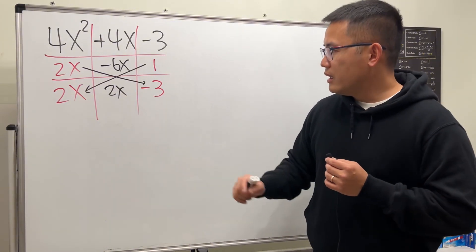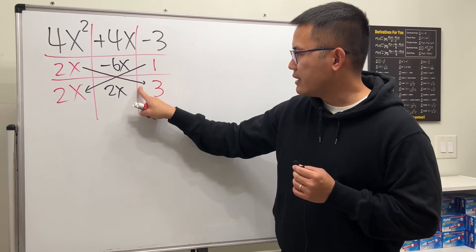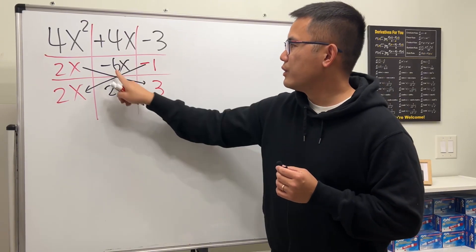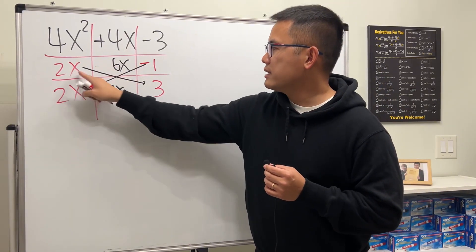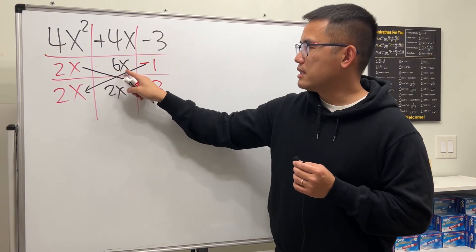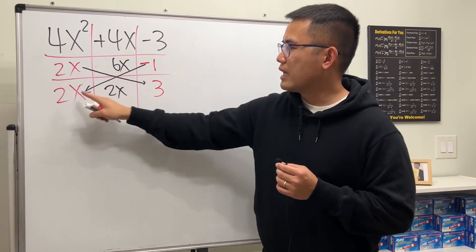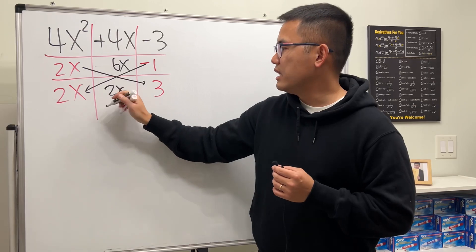But we're almost there. Imagine if we change the minus to here instead, right? 2x times 3, that's positive 6x. Negative 1 times 2x is negative 2x.